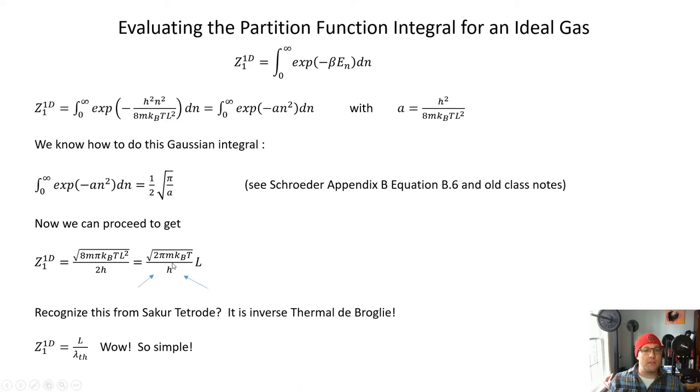And if you look real hard, you might recognize this thing multiplying the L. So this is nothing but the inverse thermal de Broglie wavelength that we invented in our analysis of the Sackur-Tetrode equation. And so we can write the whole single particle partition function for 1d gas as L, the length of the box, divided by the thermal de Broglie wavelength of the gas. Such a simple formula starting from such a messy integral. It's the power of the Gaussian integral.